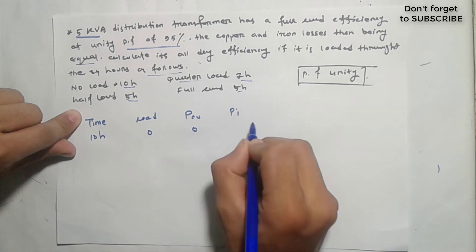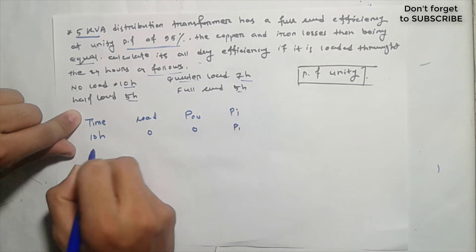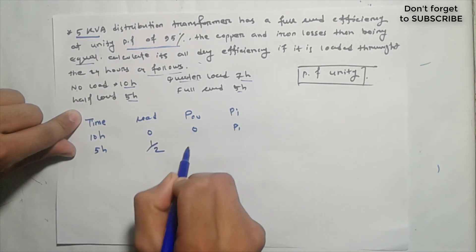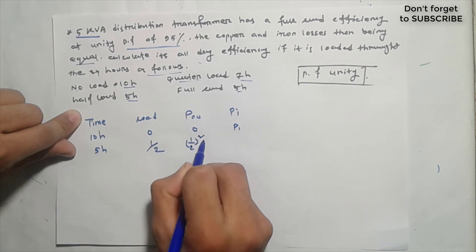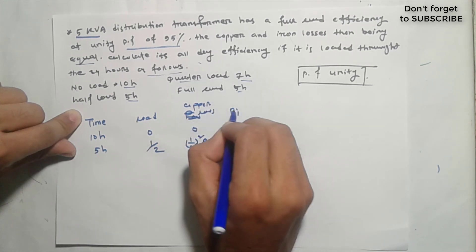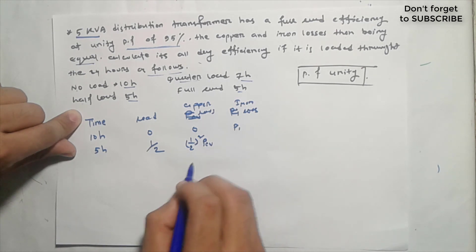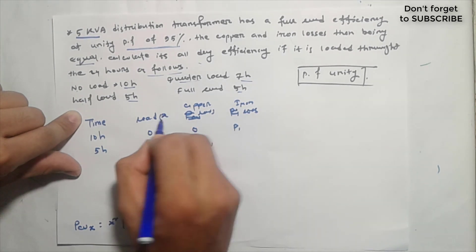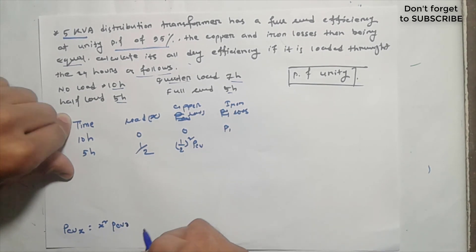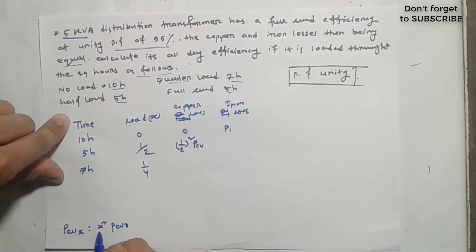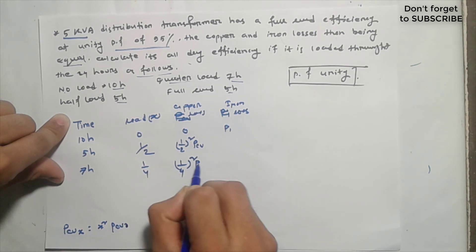I will start with the copper loss and the iron loss values. We have to add 1/4 (one-quarter) squared into Pcu — the copper loss at fractional loads. This gives us the Pcu value for each load period.